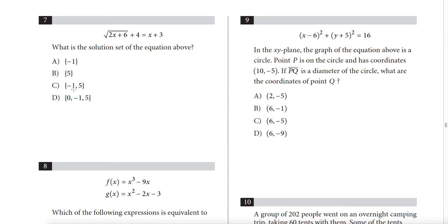Question 7: instead of solving, I check answer choices starting with D, since it shares numbers with other choices. Checking x = 0 gives √6, which doesn't work. Checking x = −1: √(−2+6) = √4 = 2, and 2+4 = 6, but −1+3 = 2 — doesn't work. So A and C are eliminated; answer is B.